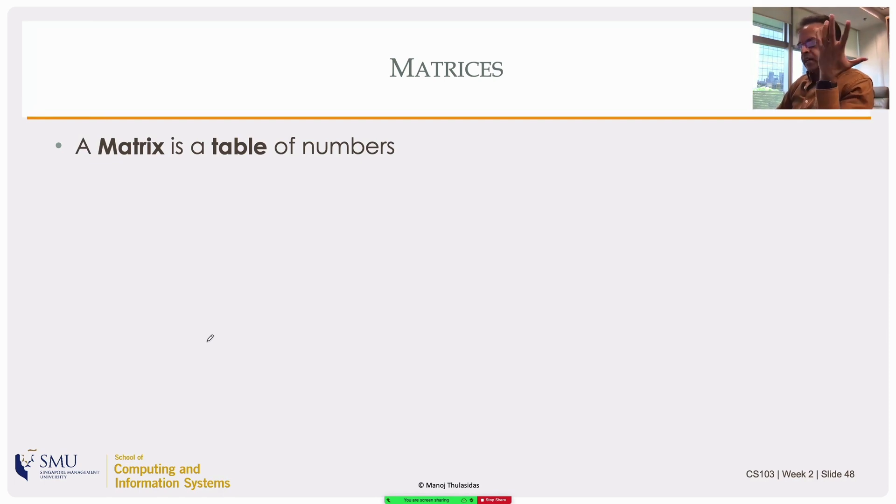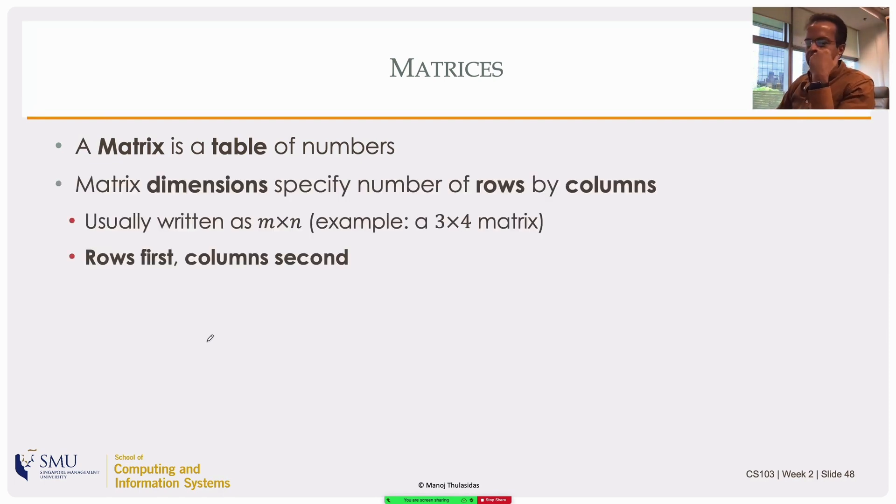A matrix is just a table of numbers, a two-dimensional array of numbers. We have to specify the table with rows and columns, so you specify the number of rows and number of columns. It's usually written as m by n, the row first and column second, always rows first.